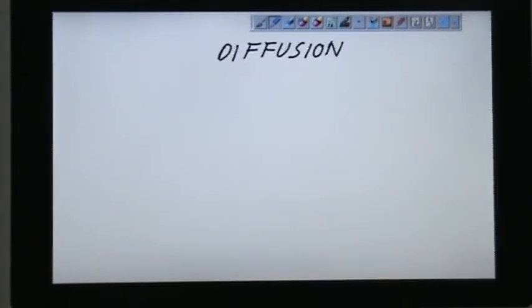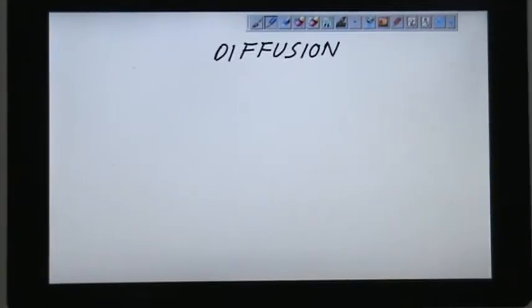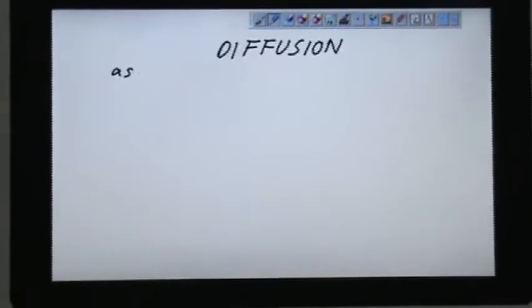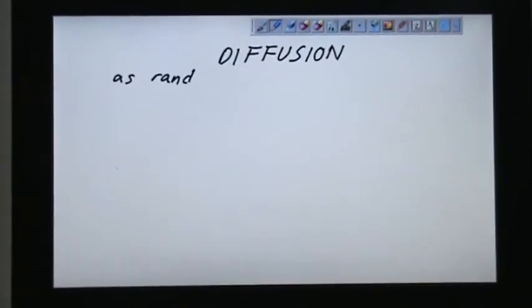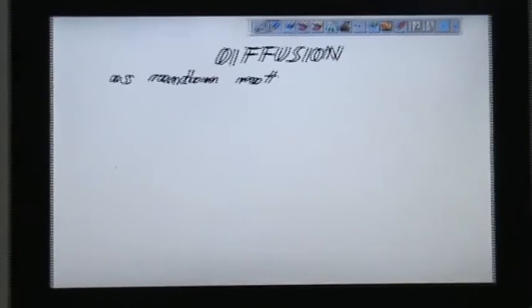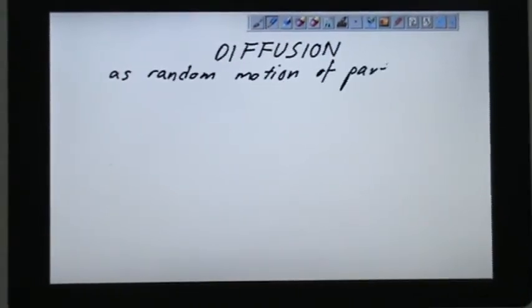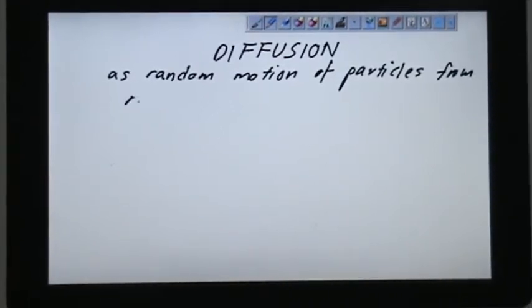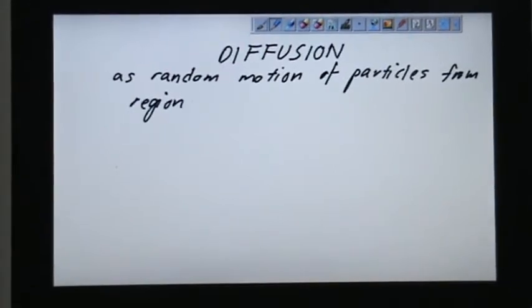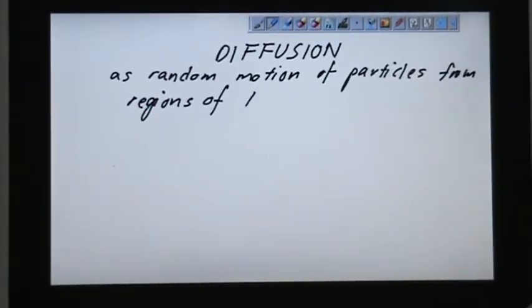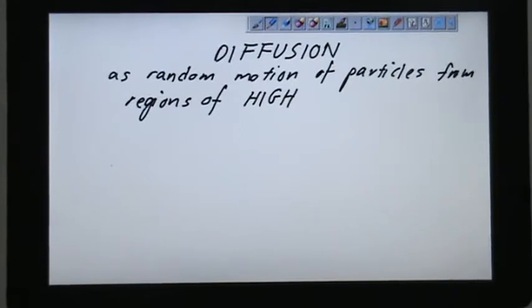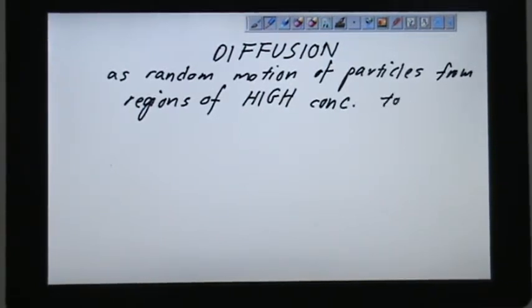What is diffusion? Let's define diffusion. Diffusion is defined as random motion of particles from regions of high concentration to regions of low concentration.